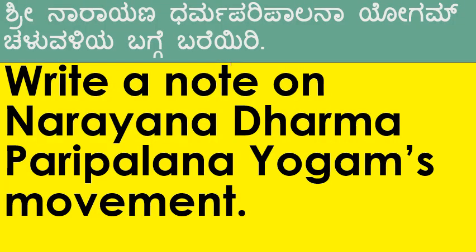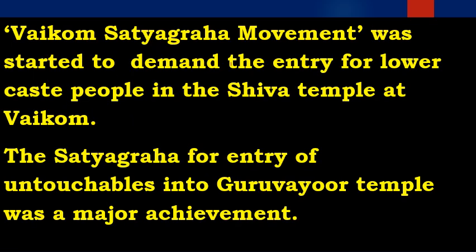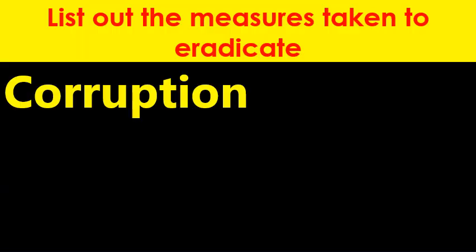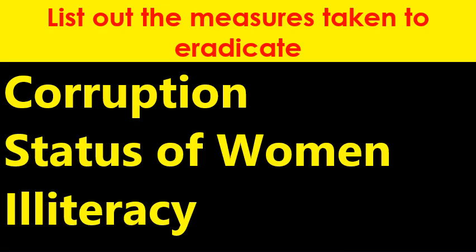Write a note on Narayana Dharma Paripalana Yogam's movement. It was started by Narayana Guru in Kerala. One caste, one religion and one god for human beings was the basic idea. Vaikam Satyagraha movement was started to demand entry for lower caste people in the Shiva temple at Vaikam.